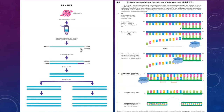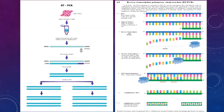Regarding serology: serology detects antibodies to SARS-CoV-2 in blood. These antibodies can be IgM, IgA, or IgG. They help identify patients who have had COVID-19 but are less likely to be positive in the early days to several weeks, so they have less utility in the acute setting. Many companies offer these tests, but accuracy depends on the sensitivity and specificity of the assay. Detectable antibodies can sometimes take weeks to develop. Methodologies include rapid diagnostic tests, chemiluminescence available in most commercial labs, ELISA, and neutralization assays.